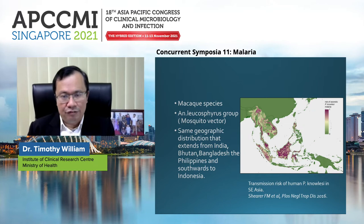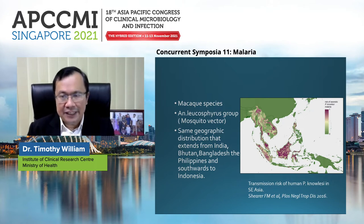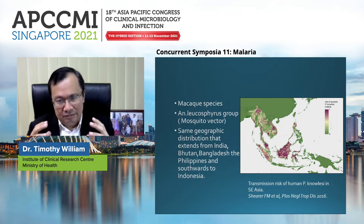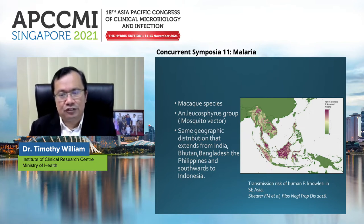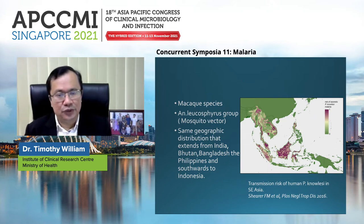The reservoir of Plasmodium knowlesi is in macaque species, and the vector is usually in the Anopheles leucosphyrus group of mosquitoes. Where you have the vector, the macaques, and the humans, that is where Plasmodium knowlesi occurs when these three groups gather together. It occurs in the same geographic distribution that extends from India, Bhutan, Bangladesh, the Philippines, and southwards to Indonesia.